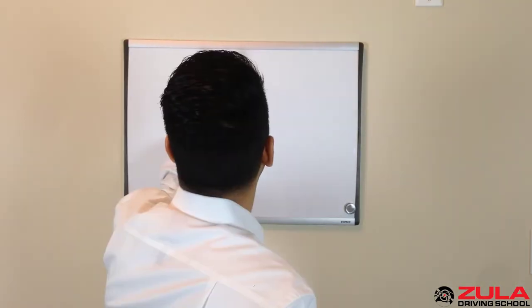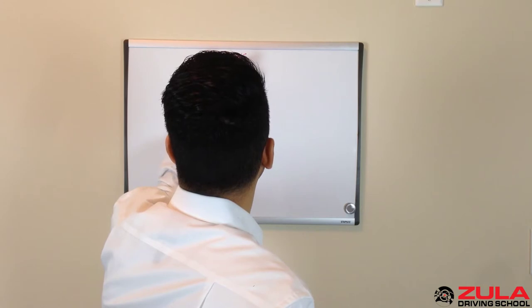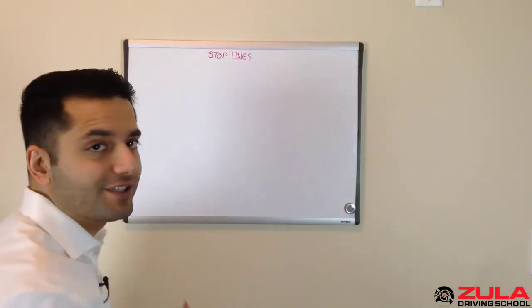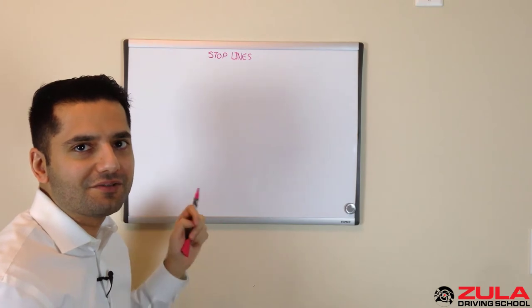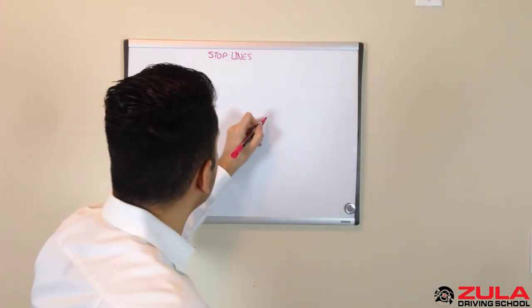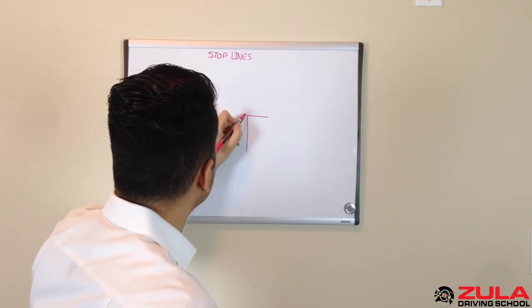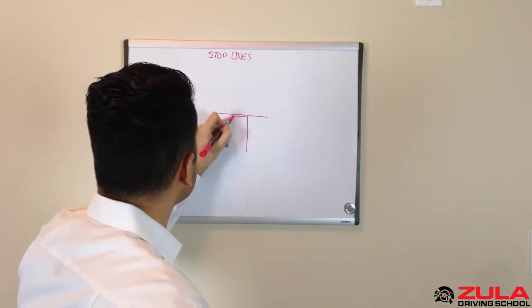Alright, stop lines. These things are super important and for some reason people kind of disregard them for the most part. But you find stop lines usually at intersections.